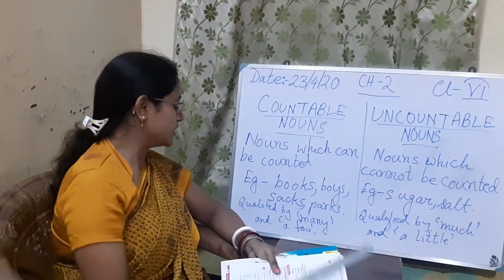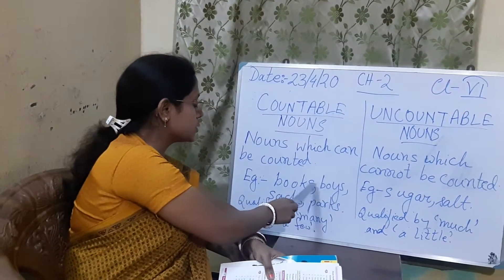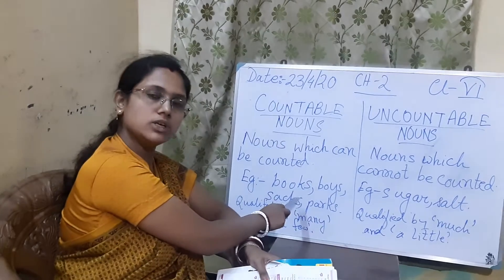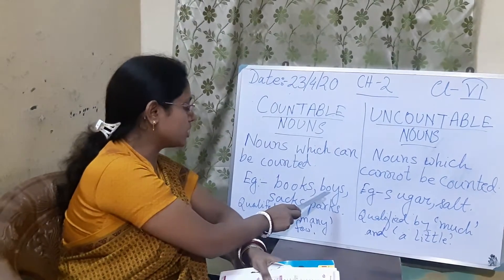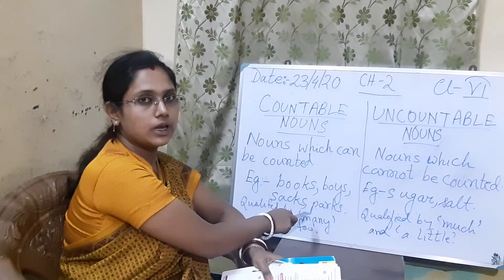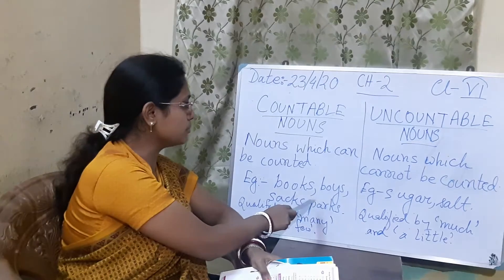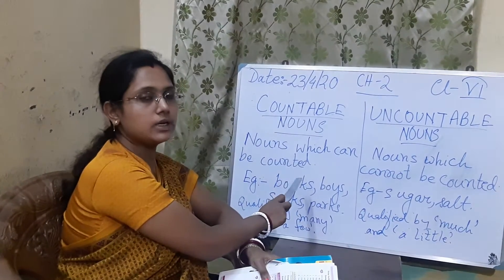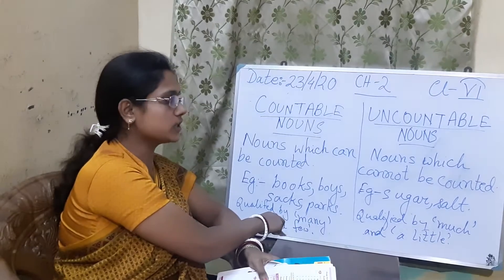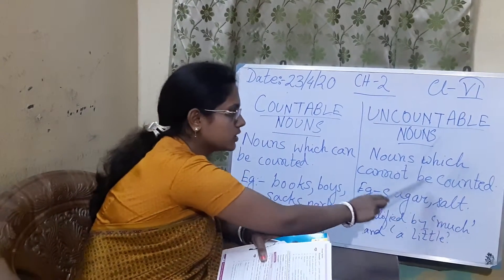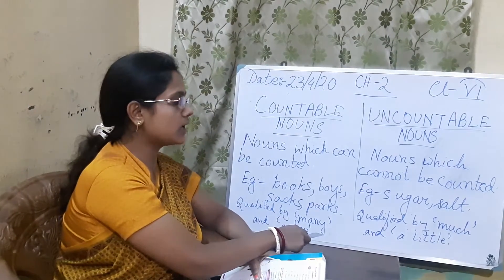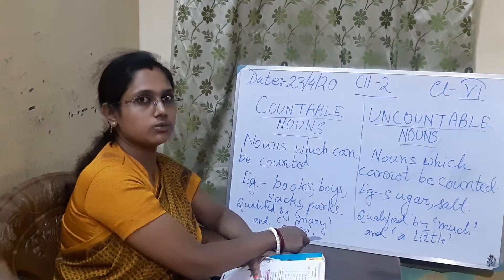Examples are also given here — like books, boys, sacks, parks. We can count the number of books, boys, sacks, and parks. That's why we call them countable nouns. But nouns which we cannot count, like the quantity of sugar or salt — we cannot count them in numbers — are called uncountable nouns.